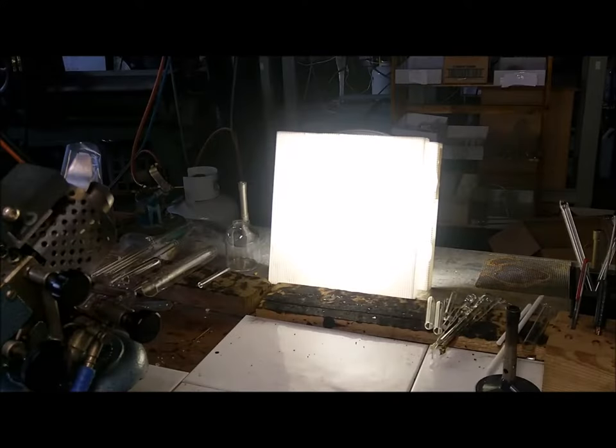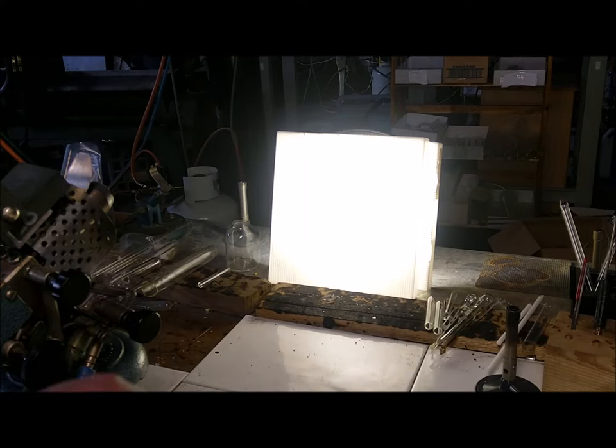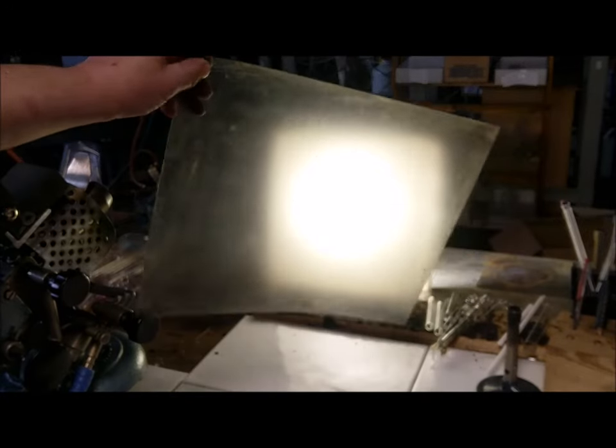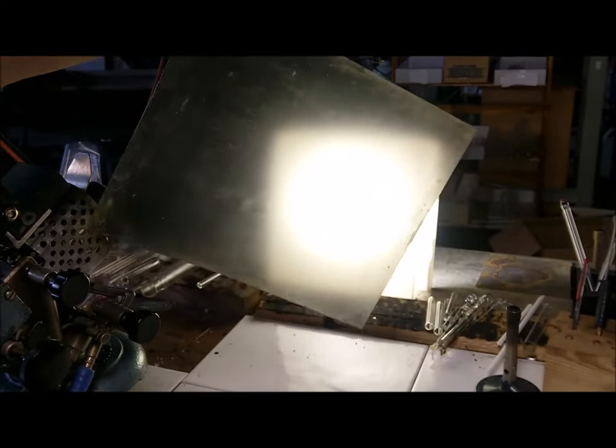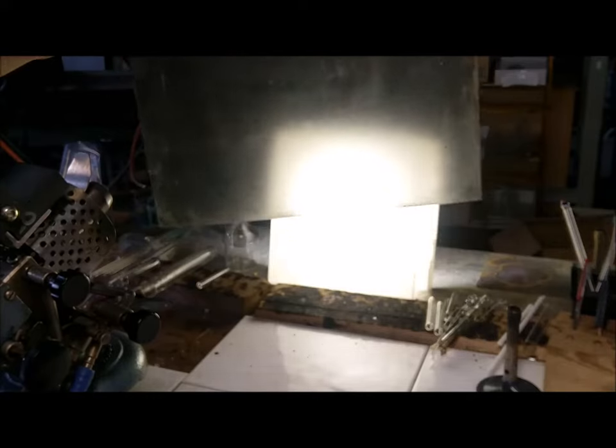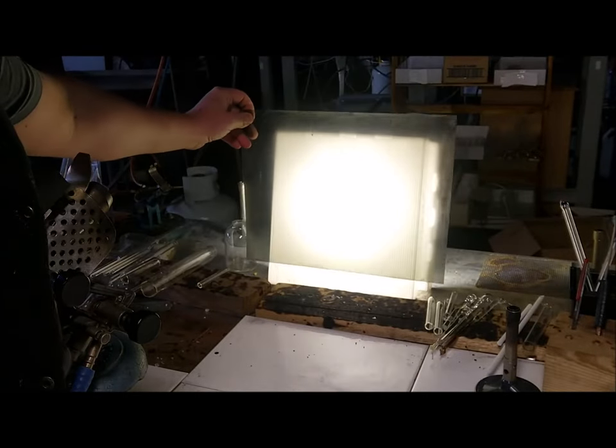All right to make our polariscope we just need a light source and I've got a couple of pieces of plastic over the front of that just to diffuse the light and just take the intensity down a bit so the camera doesn't get overexposed. All right the next thing you're going to need is a sheet of polarizing film this was salvaged from the front of an old LCD monitor so we just put that in the front